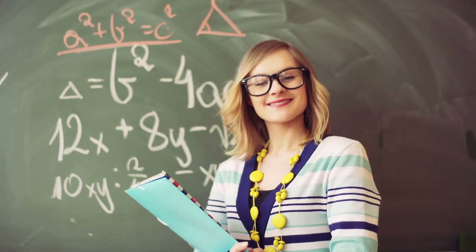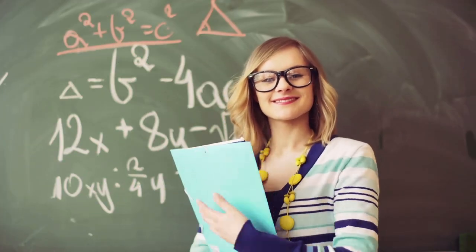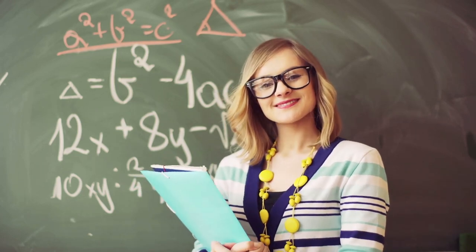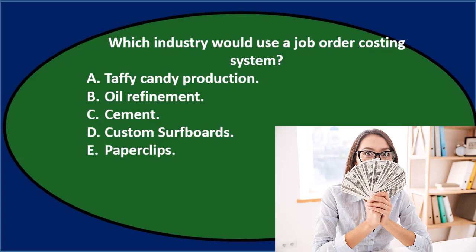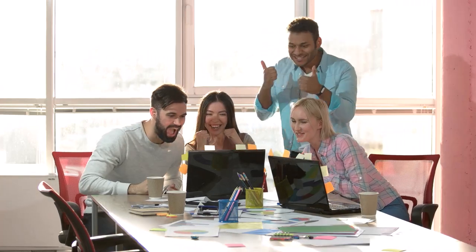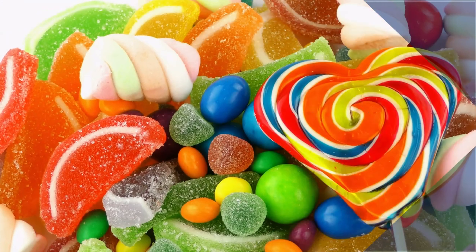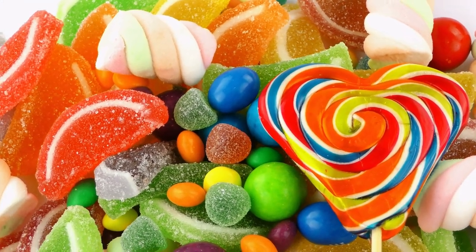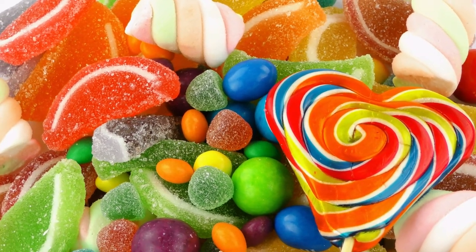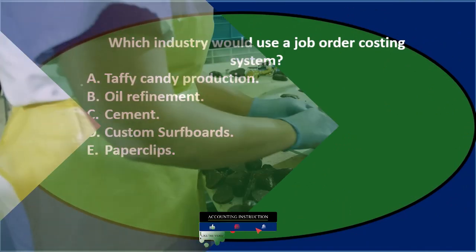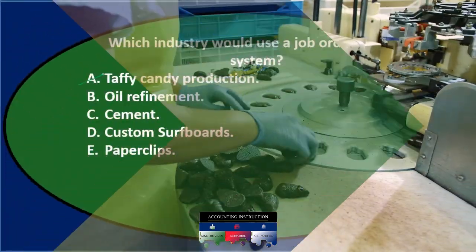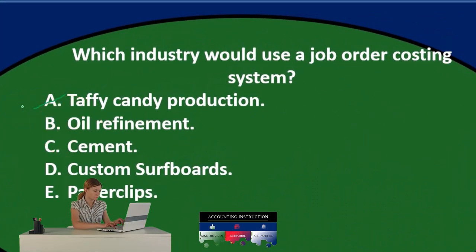Again, we're contrasting a job cost and a process cost system. We use a job cost when there's differentiation in the types of inventory we're making, and a process cost when everything is the same and we apply cost by process rather than by individual job. Taffy candy production — if it's mass produced, all the taffy is exactly the same, so that's probably a process cost. Oil refinement is one of the most classic examples of a process cost system — the goal is maximum standardization.